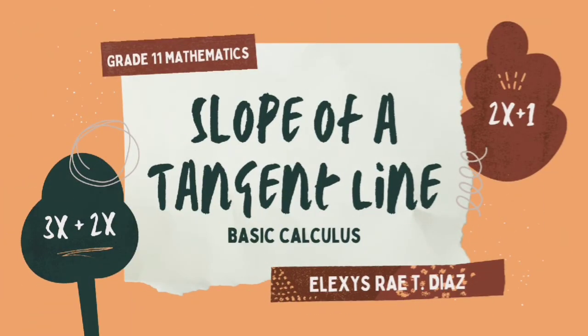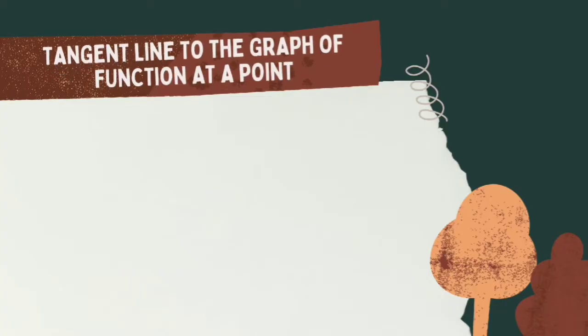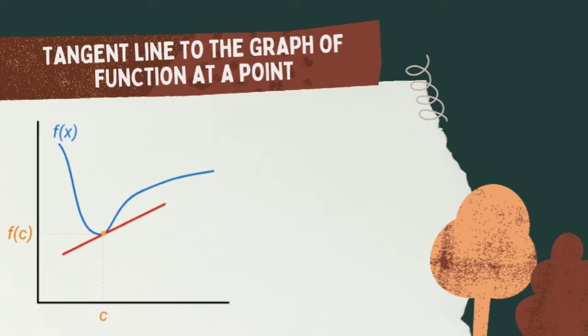So, based on the quick game I prepared, have you guessed what topic I am going to discuss? That's right! It is the slope of a tangent line. To start with, the tangent line of a circle is a line intersecting the circle at exactly one point.